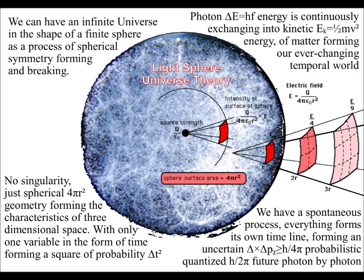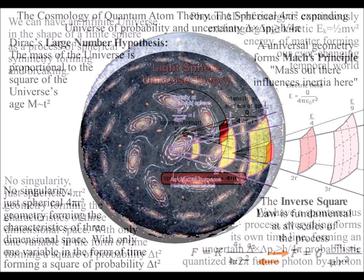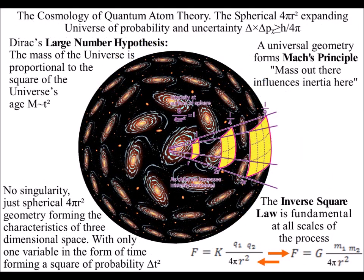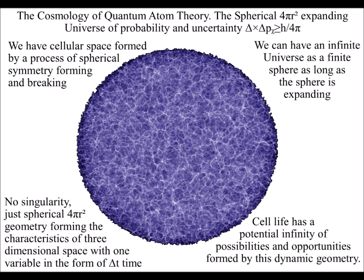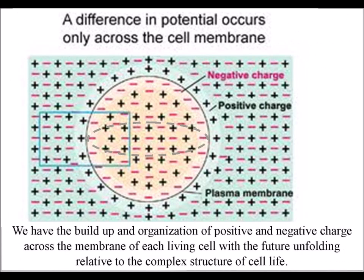In this theory, we have the same geometrical process at the large scale in the form of plasma that we have at the small scale and low temperature relative to the atoms. We can see this with the organization of charge relative to the membrane of each living cell.